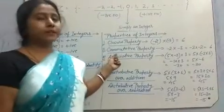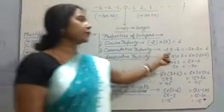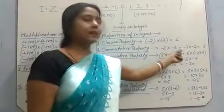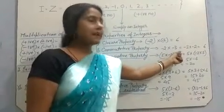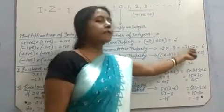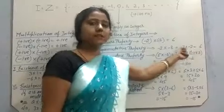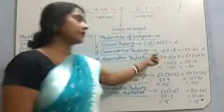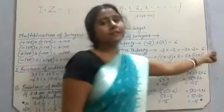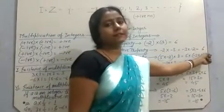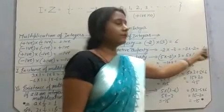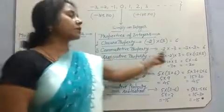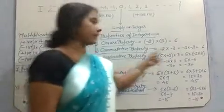The second is the commutative property. If we take two integers, minus 2 and minus 3, and if we reverse it — minus 3 into minus 2 — it will still give only 6. So this is the commutative property.